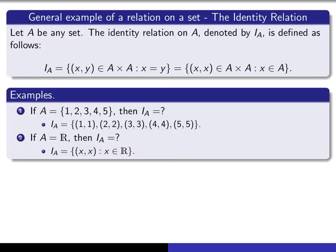Now, why we refer to this relation I sub A as the identity relation on A isn't clear at this particular point. But it shares some properties in common with what we call the identity element of the real numbers, the number 1. The number 1 has the property that when you multiply it by any real number, you get back the same real number.